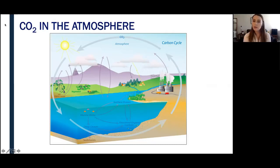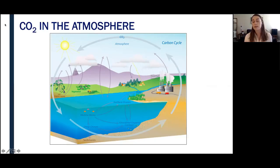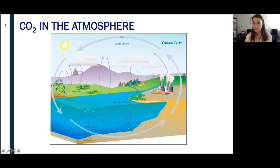The issue with increasing carbon in the atmosphere is not only are we outputting more carbon into the atmosphere than the cycle can remove, but we are removing some of these carbon sinks through deforestation, thinning soils, and increased ocean temperatures.